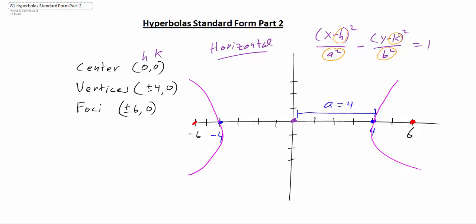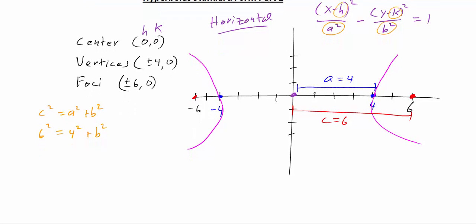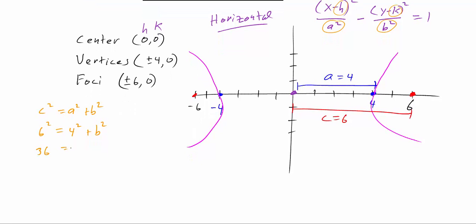We don't know the b value, but we can find c, because c is the distance from the center out to the focus. So in this case c is equal to 6. Now, knowing what a and c are, we can solve for b, because we know that c² = a² + b². So that means we have 6² = 4² and then we're going to solve for b.